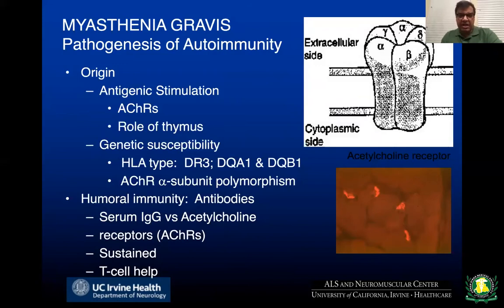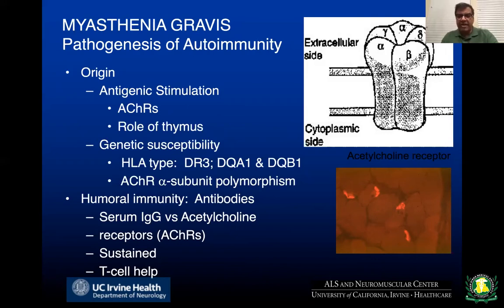There are special cases where the autoimmunity may be directed against any one subunit of this receptor. We know that the thymus gland plays an important role in generation of this autoimmunity, and that's why thymectomy, or surgical removal of the thymus, is an important treatment consideration. We also know that there has to be genetic susceptibility. It's usually the DR3, DQA1, and DQB1 haplotypes that put people at risk for myasthenia gravis.